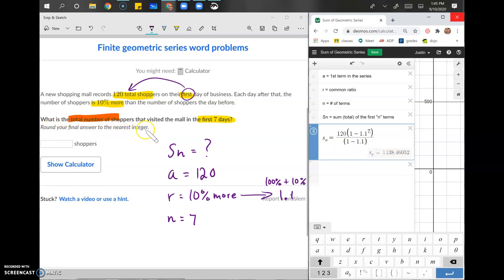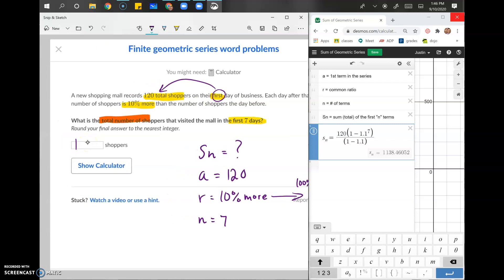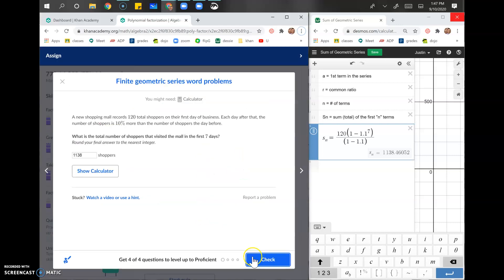And now we know what S of N is. Round your final answer to the nearest integer. So if you don't know rounding rules, you should look them up, but we're rounding down here. I think we're rounding down cause it's 0.4. So it should just be 1,138 is my guess. Let's see if I'm right. Yes.